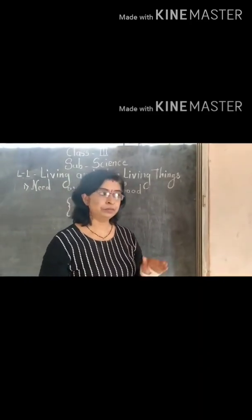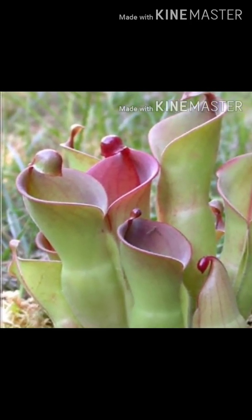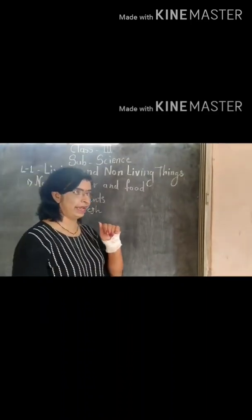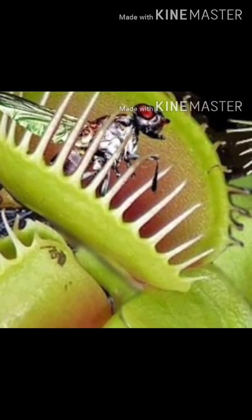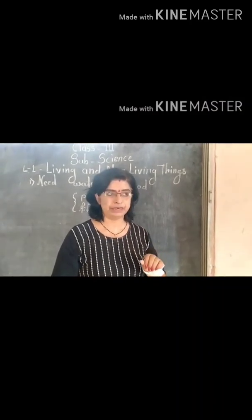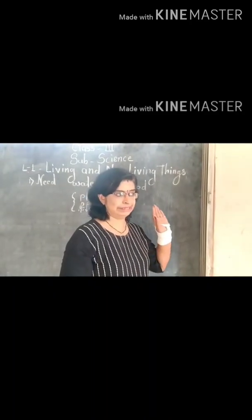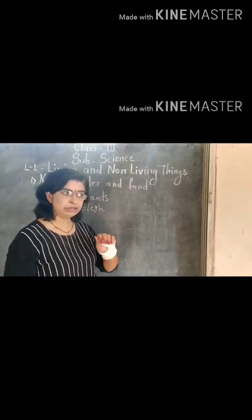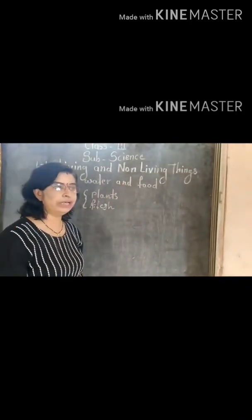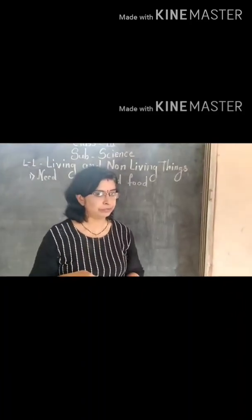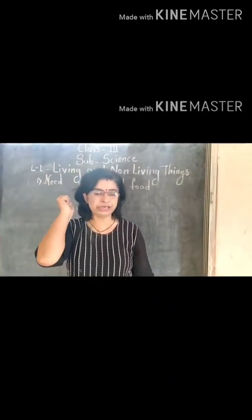But some plants like pitcher plant and venus fly trap are insectivorous plants. They trap insects, kill them, and get their food from the insects. So all living things need food. Similarly, all living things need food for their living. We take water; all animals take water; plants get water from the soil. So all living things need food and water to live.